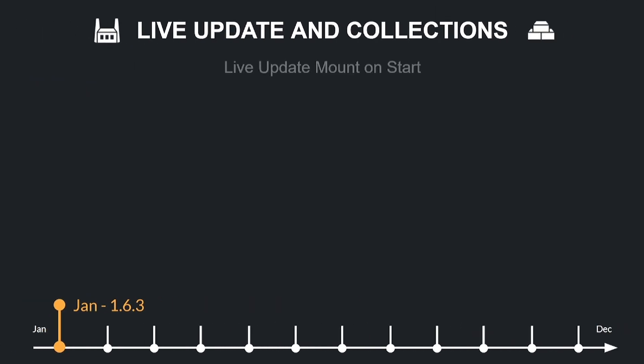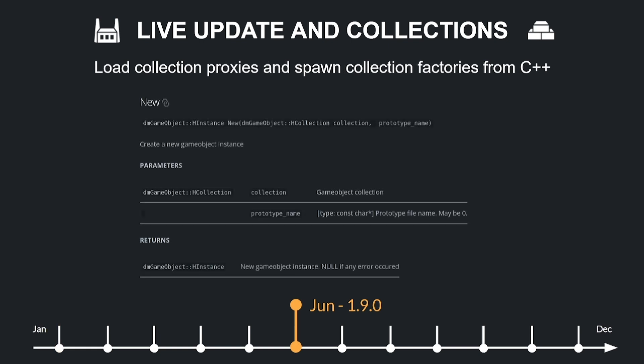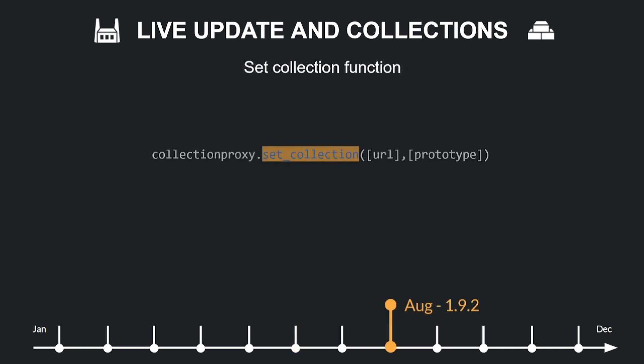Let's see what was added to improve live updates and collections management in Default. They added a Live Update Mount on Start checkbox in Game.project to enable or disable automatic resource mounting, allowing manual control of resource management. Default also added the possibility to load collection proxies and spawn factories from C++, adding more functionality to the C++ SDK as part of the effort to allow developers to write game logic using C++.